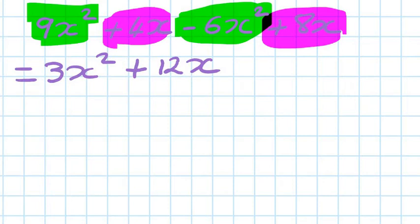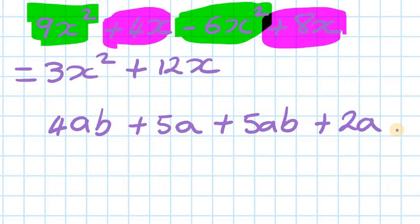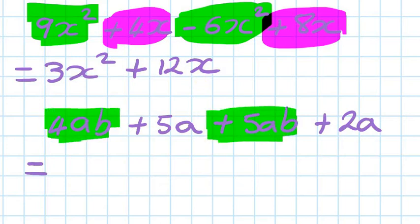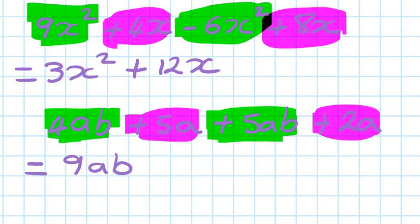Next one: 4ab plus 5ab plus 5a plus 2a. You can see there are two like terms. So 4ab and 5ab are a like term — 4 plus 5 is 9, so 9ab. And then what we have is 5a and 2a, so therefore we add them together: 5 plus 2 is 7, so 7a. That's all.